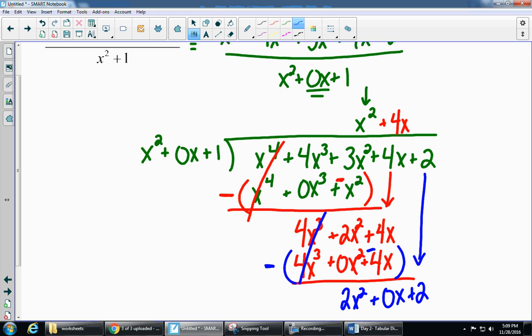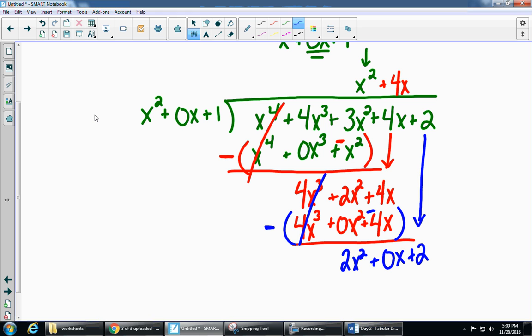So now I want to find out what times x squared gives me 2x squared. So I have a plus 2. As soon as you get a top piece, multiply. 2 times x squared is 2x squared. 2 times 0x is 0. And 2 times 1 is 2.